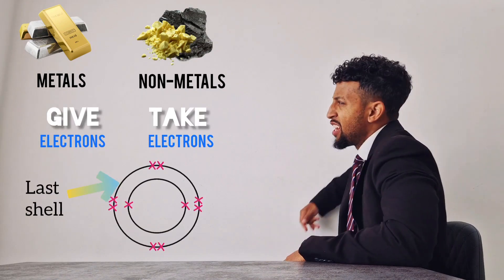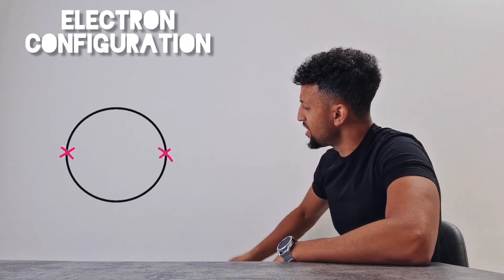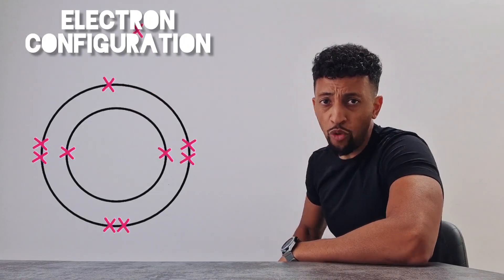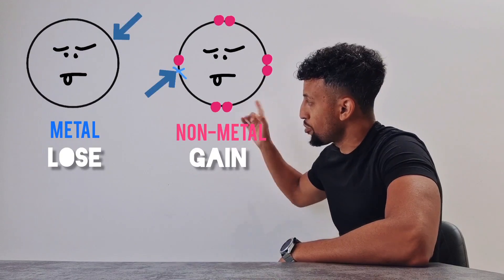But before we get to that last shell, this is how electrons are placed. First shell two, then next go eight. If they're not completely full they won't feel great. In a reaction they will lose or gain outer shell electrons just to end that pain.